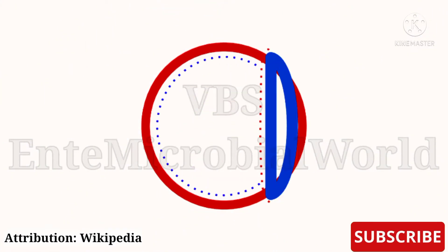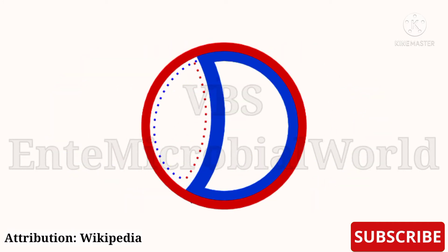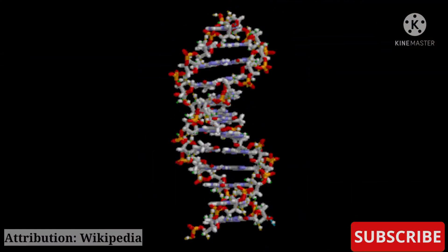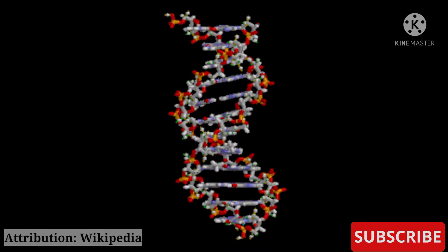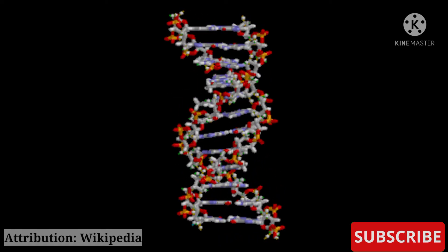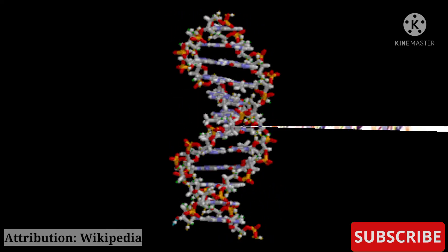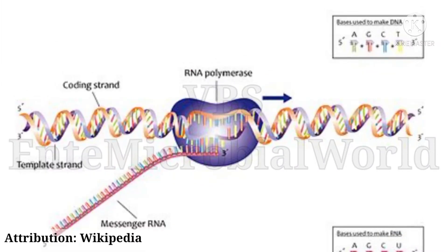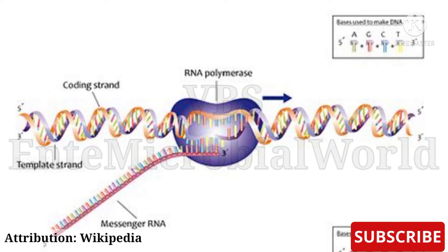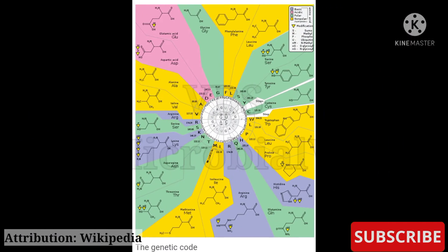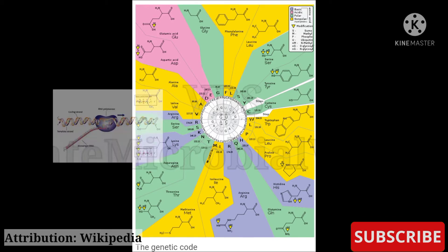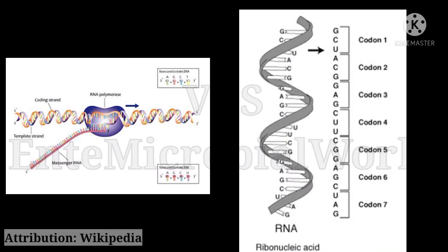Each strand of the replication fork acts as a template for the synthesis of a complementary strand, with which it then forms a double helix. DNA acts as the template for the synthesis of mRNA. Genetic information is stored in the DNA as a code consisting of a sequence of three bases — the code is triplet — and each triplet transcribed on mRNA determines a single amino acid.